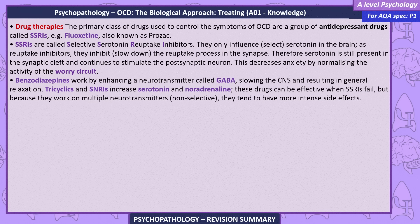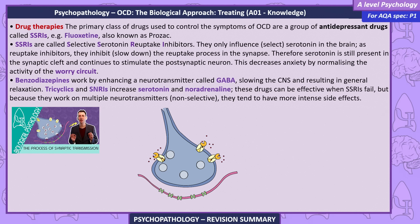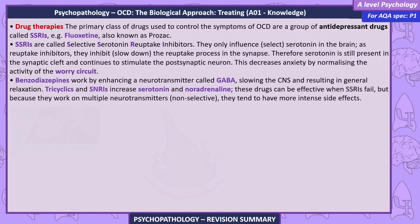Treating — drug therapies. The primary class of drugs used to control OCD symptoms are antidepressants called SSRIs, for example fluoxetine (Prozac). SSRIs — selective serotonin reuptake inhibitors — only influence serotonin in the brain. As reuptake inhibitors, they slow down the reuptake process in the synapse, so serotonin remains in the synaptic cleft and continues to stimulate the postsynaptic neuron, decreasing anxiety by normalizing activity of the worry circuit. Benzodiazepines work by enhancing the neurotransmitter GABA, slowing the central nervous system and resulting in general relaxation. Tricyclics and SNRIs increase serotonin and noradrenaline; these drugs can be effective when SSRIs fail, but because they work on multiple neurotransmitters they are non-selective and tend to have more intense side effects.